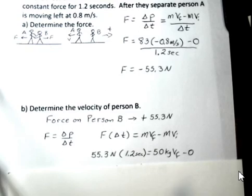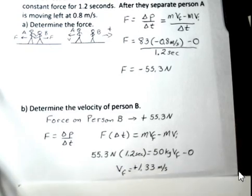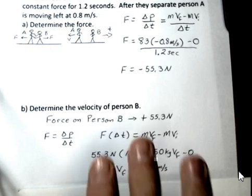Again, person B was at rest before this. So, use your calculator. And you should come up with the V final of 1.33 meters per second. So, is there another way to solve this problem after part A?